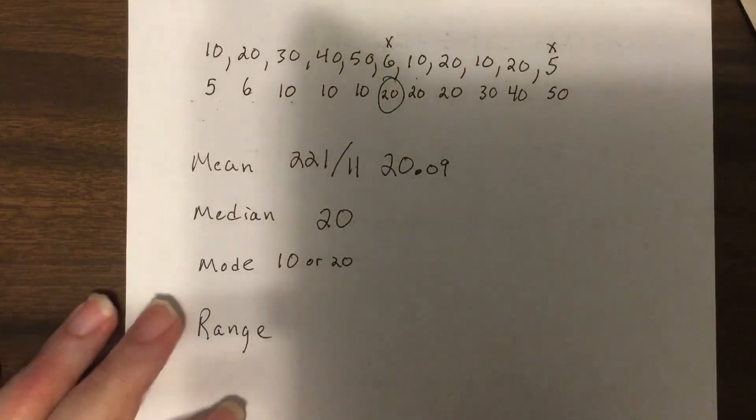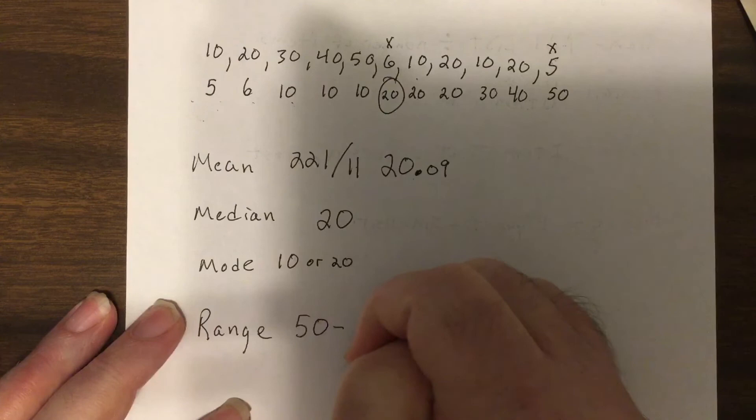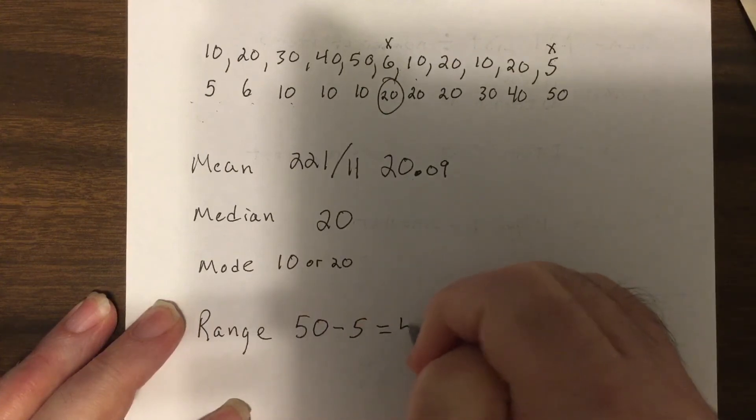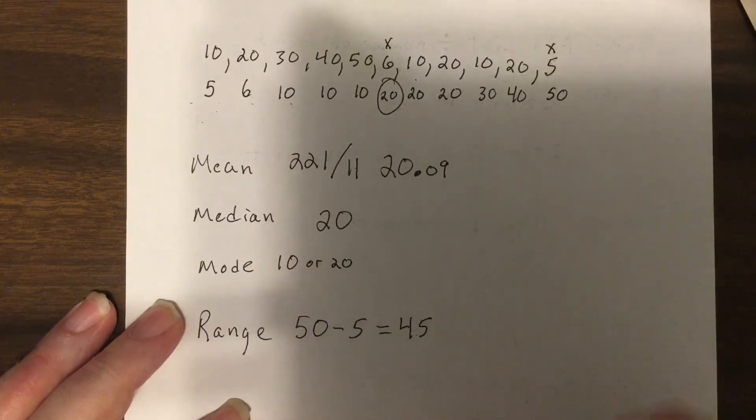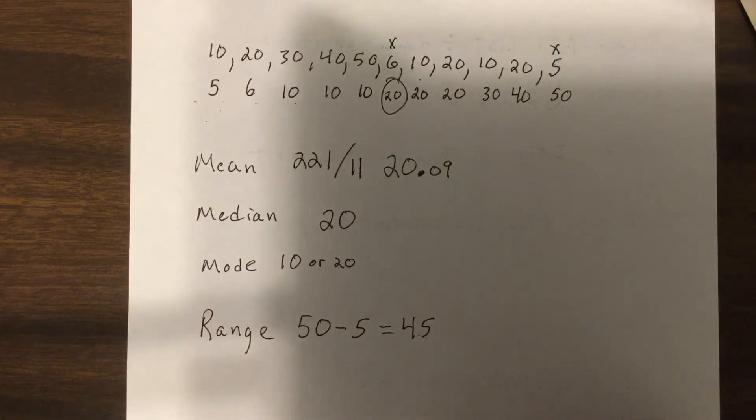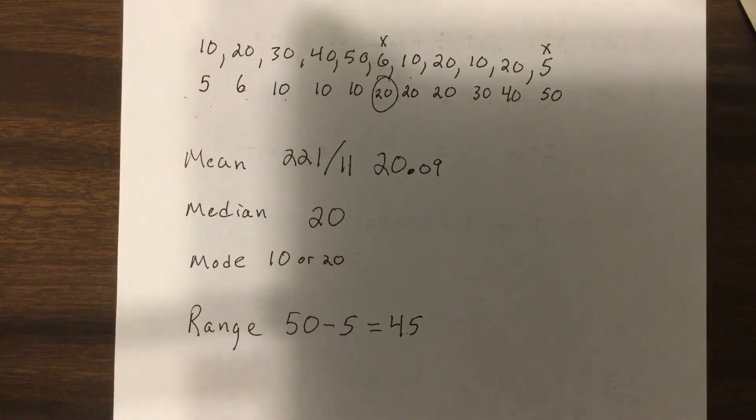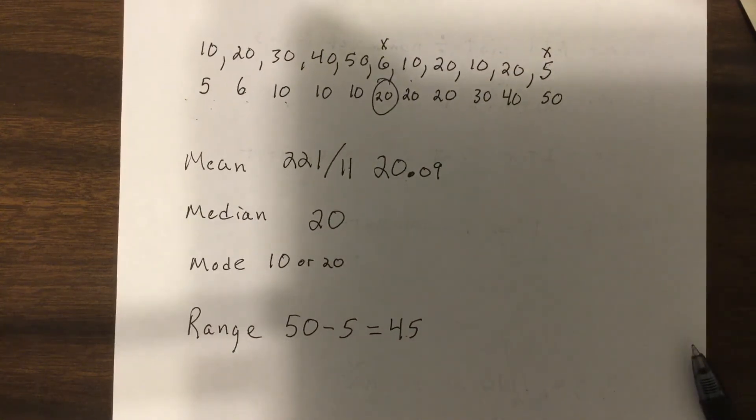And the range would be 50 minus 5 equals 45. I know Trixie, I'm sorry. Trixie's getting excited, so the range would be 45. Okay.